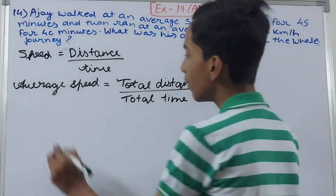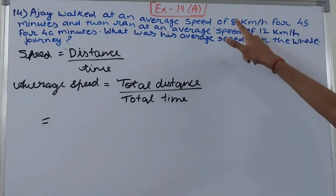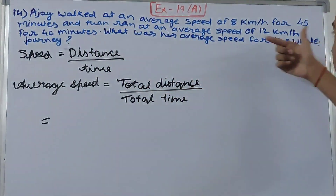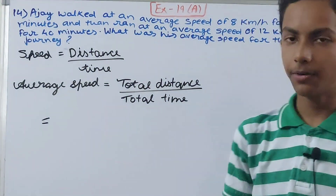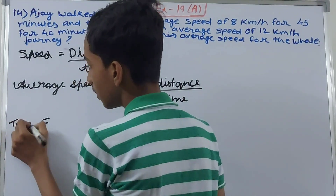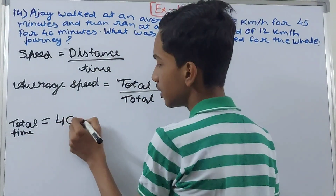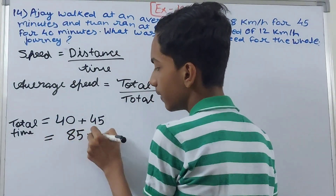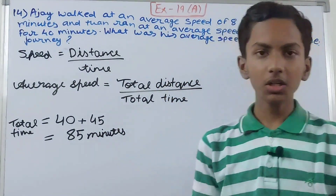In this question, Ajay first travels at an average speed of 8 kilometers per hour for 45 minutes, then runs at an average speed of 12 kilometers per hour for 40 minutes. So first, let's find the total time: 40 minutes plus 45 minutes equals 85 minutes.